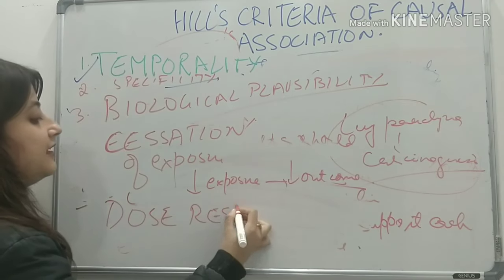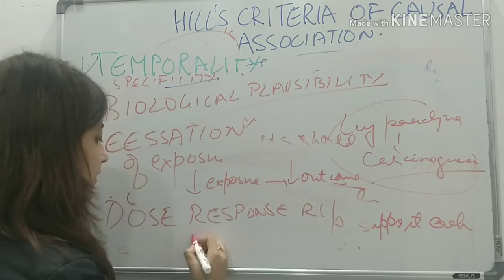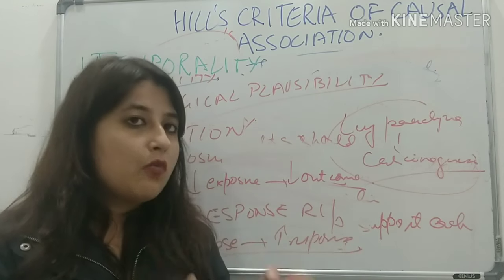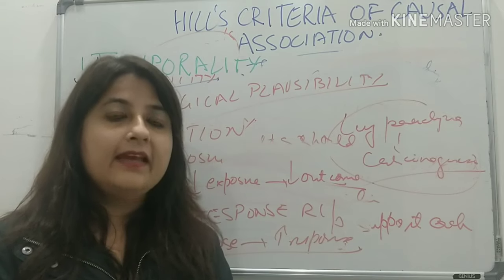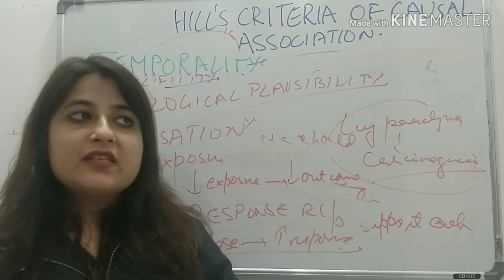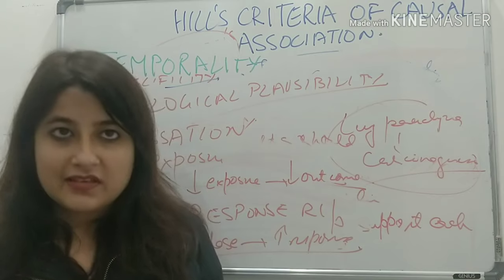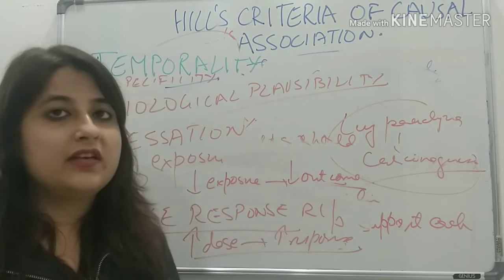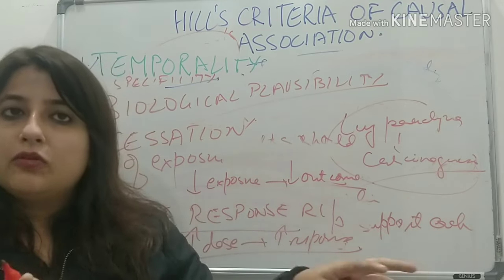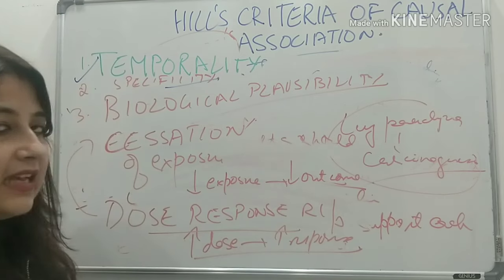Next is dose response relationship. If you increase the dose, the response increases. So if someone smokes one cigarette a day, the chance of lung cancer is at a certain level; if they smoke five cigarettes a day it increases two times; if they smoke ten cigarettes a day it increases even further. You can also study it the contrasting way: decrease exposure, outcome reduces; increase dose, disease chance increases.